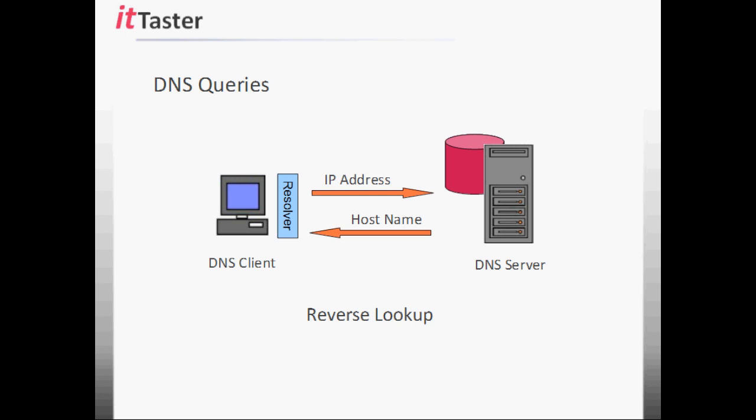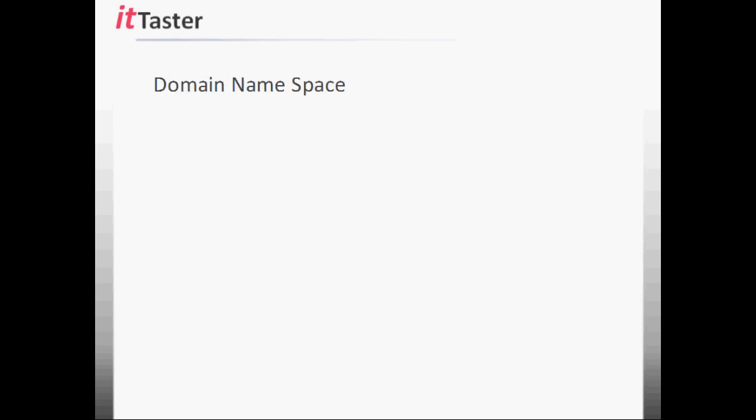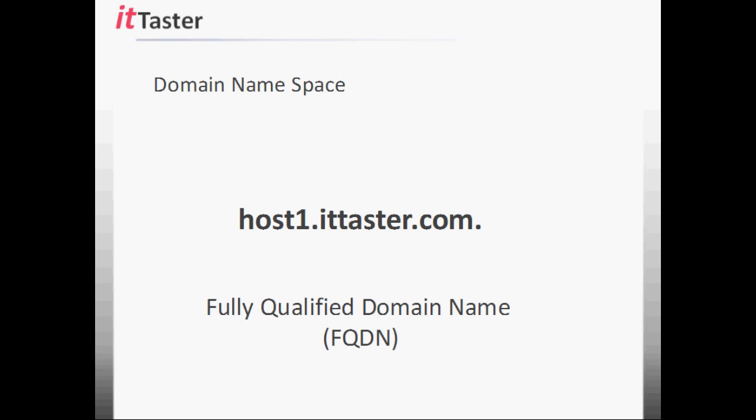Now both of these lookup query examples are very simplified. But before we take a closer look at how DNS resolution works, we need to talk about the domain namespace. The domain namespace is a naming scheme organized into a tree-like hierarchy. If we take a look at the example host1.ittaster.com, this is known as a fully qualified domain name, or FQDN. A fully qualified domain name gives the exact location within the tree structure. Each level in the domain tree structure is separated by a full stop, very similar to specifying a path to a file by quoting all of the folder levels. The important thing to remember is that domain names are resolved from right to left.